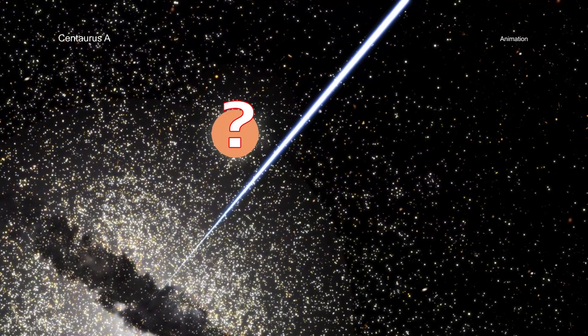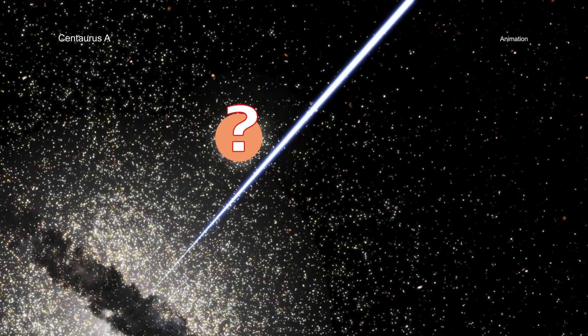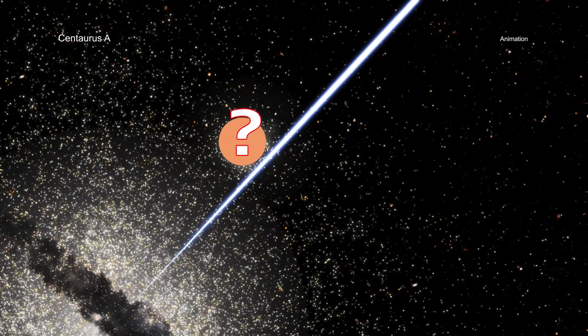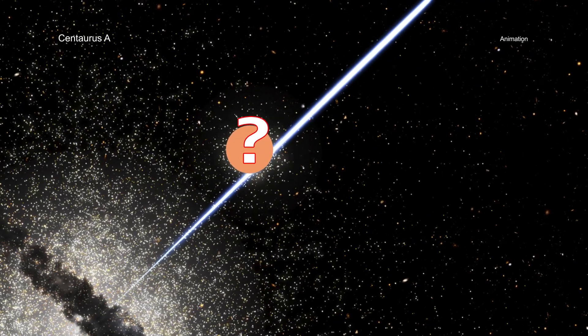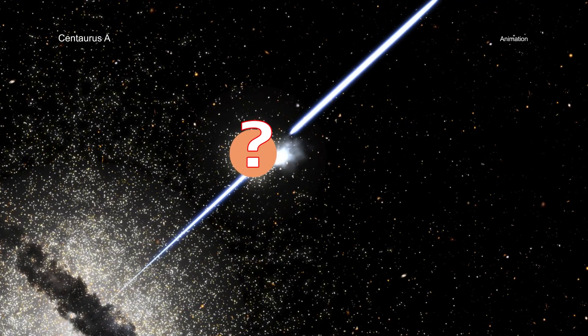While the researchers have ideas about what is happening, the identity of the object being blasted is a mystery because it is too distant for details to be seen, even in images from the current most powerful telescopes.